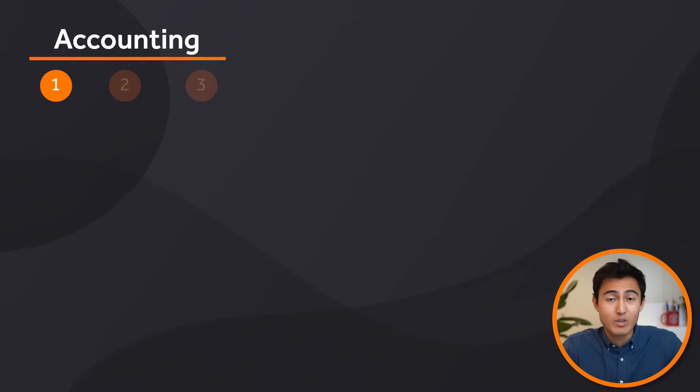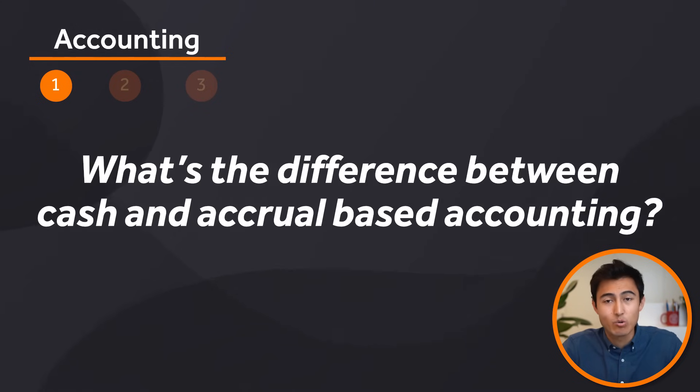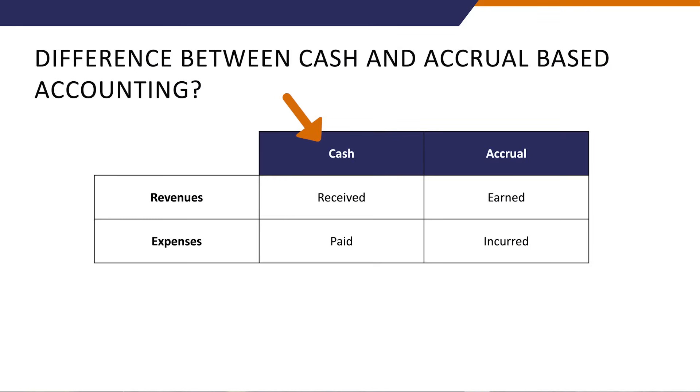First up, we have accounting questions — three of the most common ones from easiest to hardest. What's the difference between cash and accrual based accounting? Cash accounting shows a transaction when cash has gone in or out of the company, while accrual accounting records a transaction when revenue has been earned or an expense incurred, even if money hasn't been received or paid yet. For example, if you sell 100 books in January but are paid in February, cash accounting records it in February while accrual accounting records it in January.